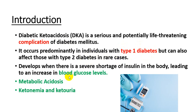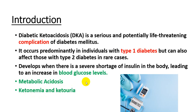There are three things present in diabetic ketoacidosis. If there is a shortage of insulin in the body, it leads to increased blood glucose — hyperglycemia — along with metabolic acidosis and increased ketone bodies in the blood and urine, resulting in ketonemia and ketonuria. This is the brief introduction.